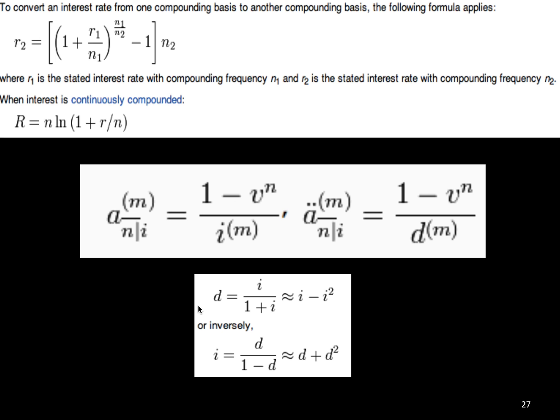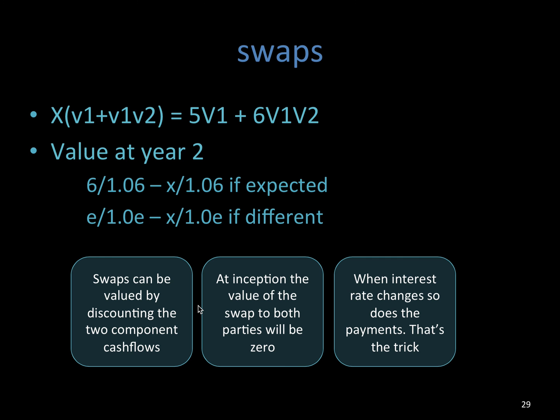Options tend to use the no-arbitrage valuation method, which you should be familiar with from Subject CT8 and CT1 — I do have a video on no-arbitrage, so go check that out to refresh yourself. Swaps are a little bit more complicated but similar: they can be valued by discounting the two component cash flows. At inception, the value of the swap to both parties will be zero. When interest rates change, so do the payments — and that's the big trick.